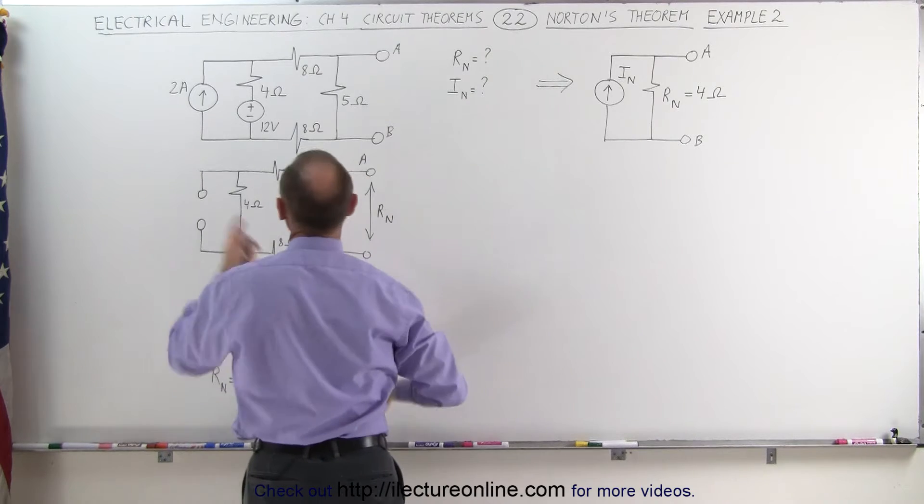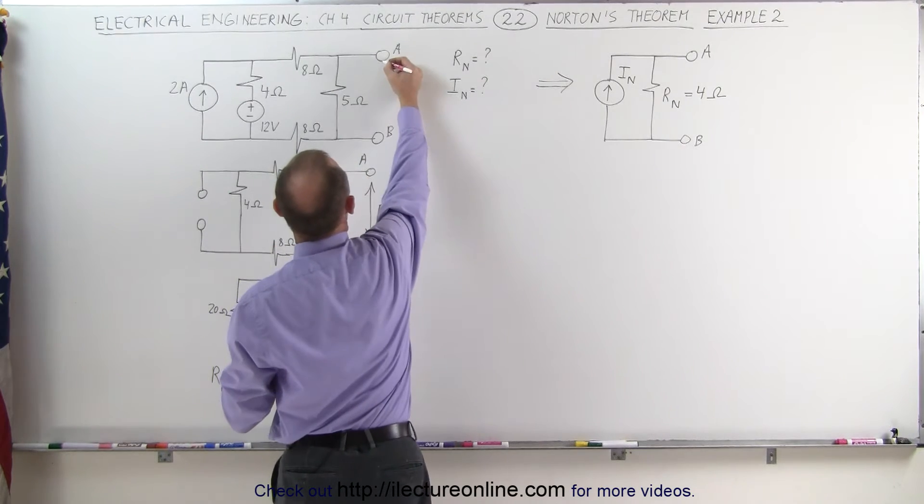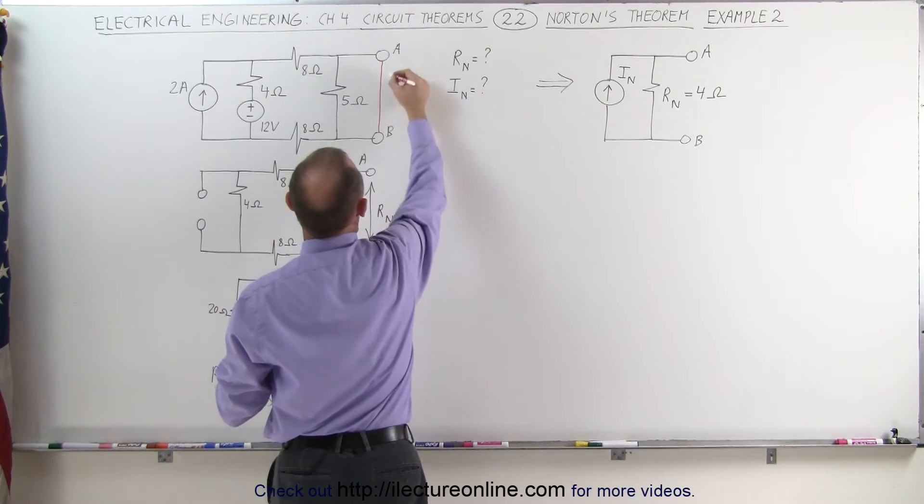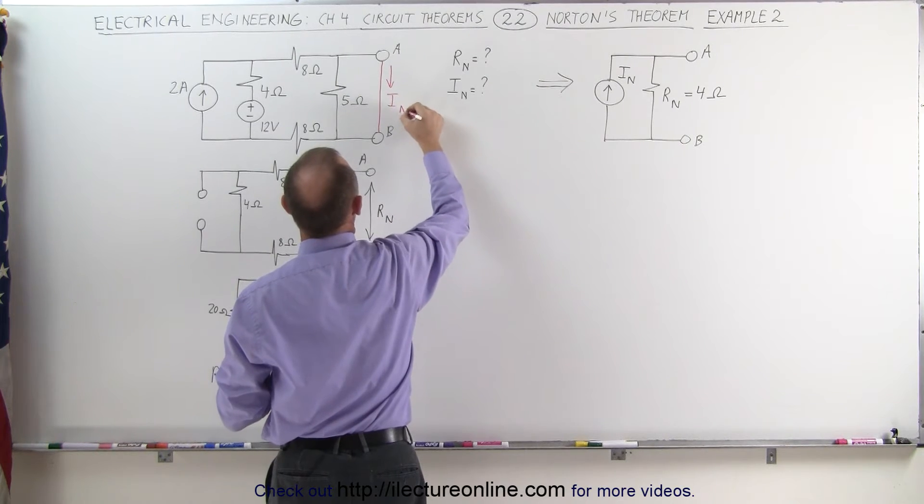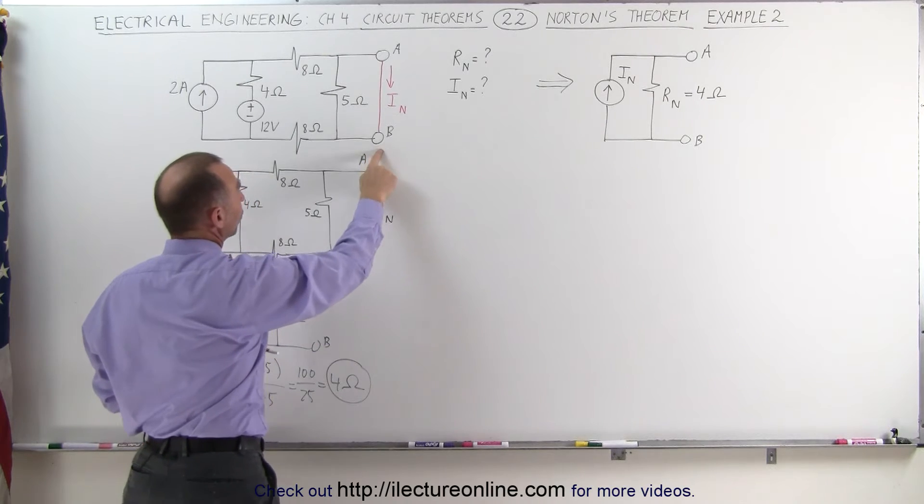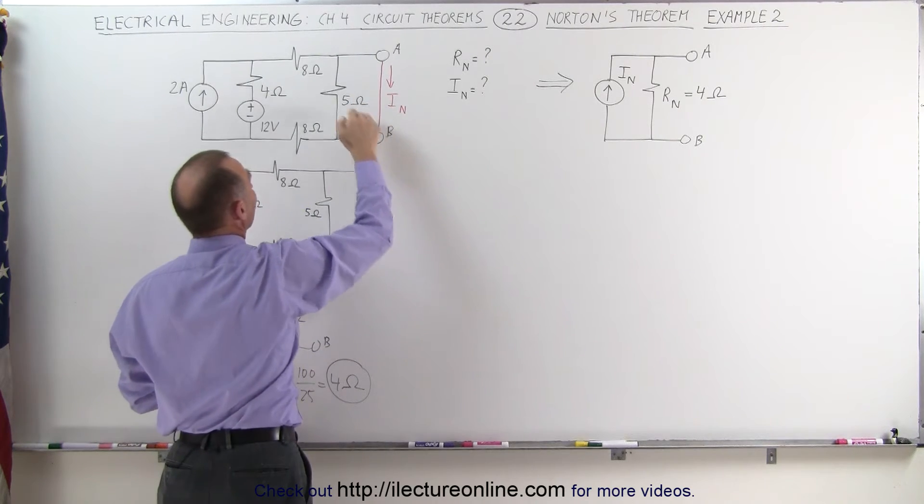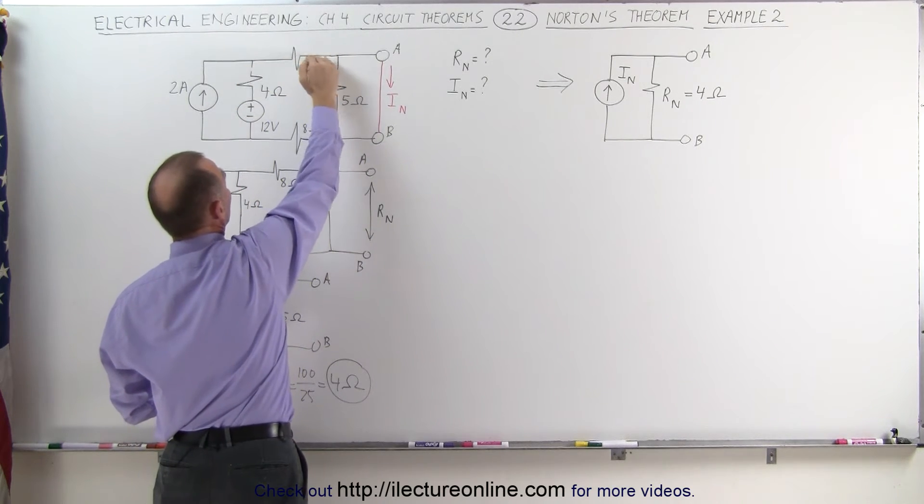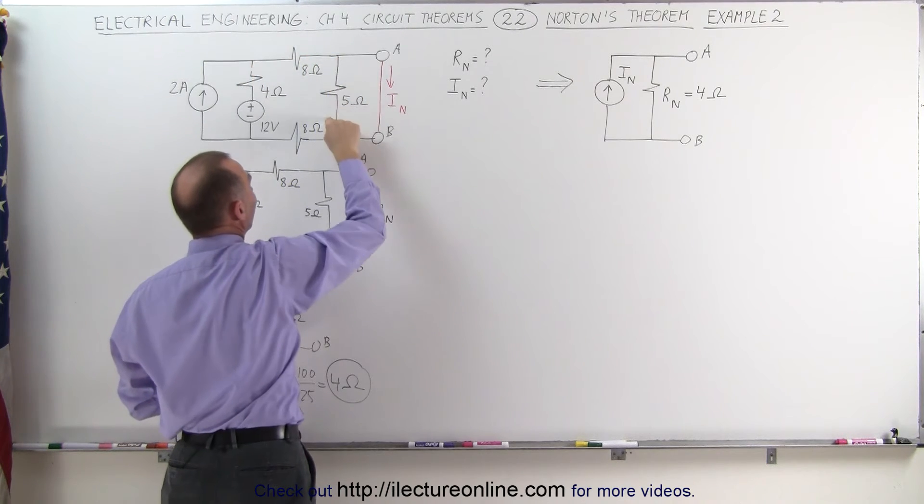Actually, I don't need to redraw it. I can simply say I'm going to short the circuit out like this and whatever current I have here that's going to be I sub N. Now notice if I short the circuit between A and B and any current that flows in this direction, rather than flowing through the 5 ohm resistor,